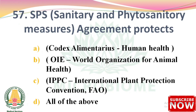Next question: the Sanitary and Phytosanitary (SPS) Measures Agreement protects — options: Codex Alimentarius for human health, OIE (World Organization for Animal Health), IPPC (International Plant Protection Convention), all of the above. The right answer is Option D: all of the above — Codex Alimentarius for human health, World Organization for Animal Health, and International Plant Protection Convention.